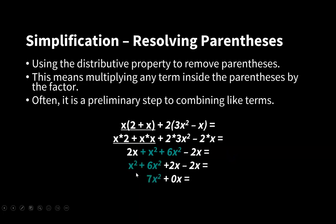In this case, we see that x² + 6x² equals 7x², but 2x - 2x equals 0x, which can be ignored. This entire preliminary version of the equation was simplified to simply 7x².